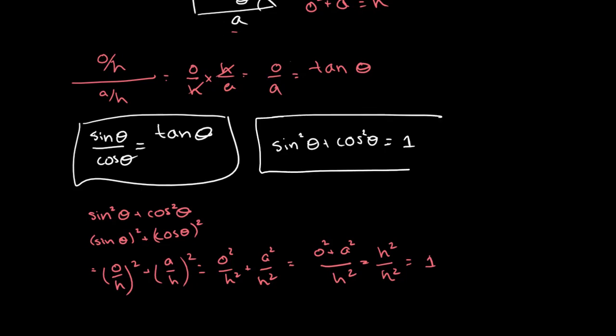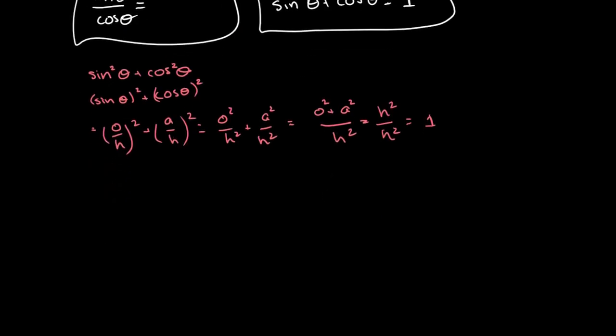Both of these identities basically make your life much easier when you have to calculate stuff involving sine, cosine, and tangent. Memorizing both of these equations is very important, because when dealing with questions involving identities, you have to be able to call upon these identities when you need them. If you don't know them well, you won't be able to recognize where you can use them.